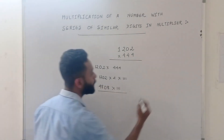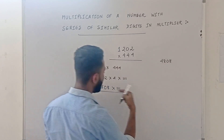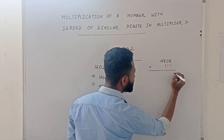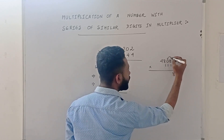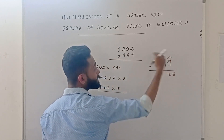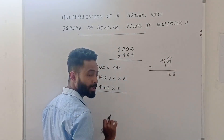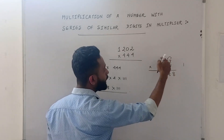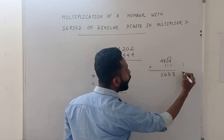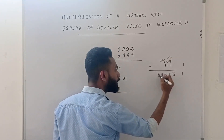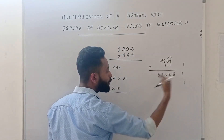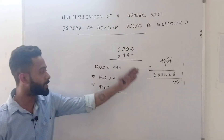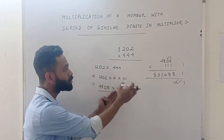Let's see: 4808 multiplied by 111. So we multiply and get a series. Here we get 8 plus 8 plus 4, which gives us 13. So if this equals 8 plus 8 plus 4, that gives us 13. Using the trick, the answer is 533688.